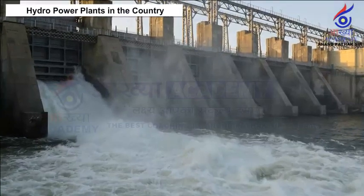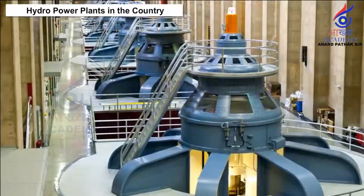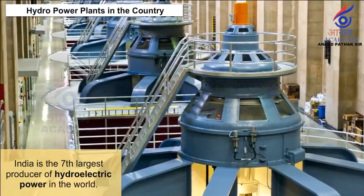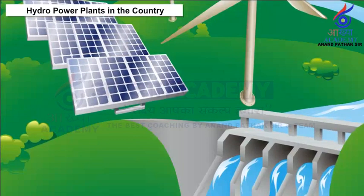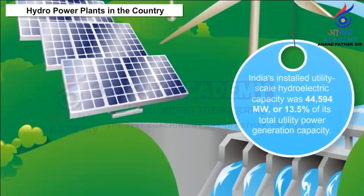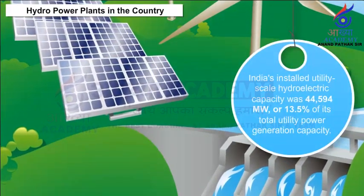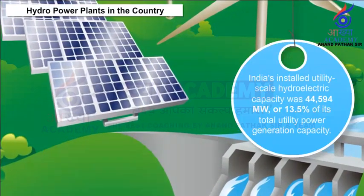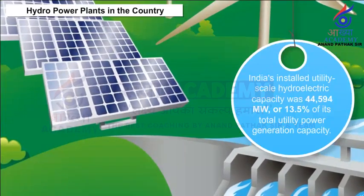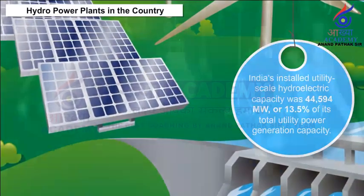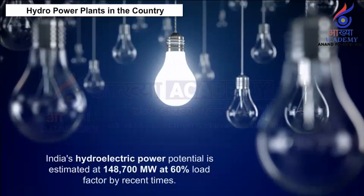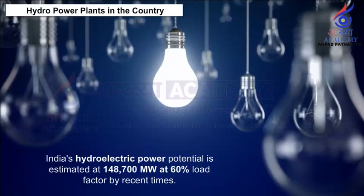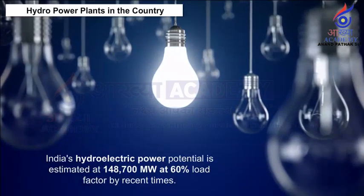Hydro Power Plants in the Country. India is the seventh largest producer of hydroelectric power in the world. As of 30 April 2017, India's installed utility-scale hydroelectric capacity was 44,594 megawatts, or 13.5% of its total utility power generation capacity. India's hydroelectric power potential is estimated at 1,48,700 megawatts at 60% load factor.